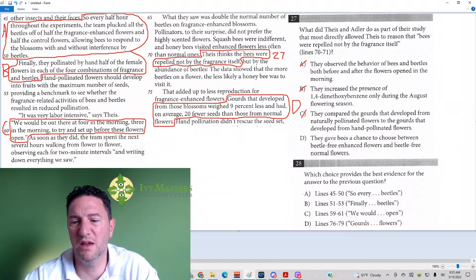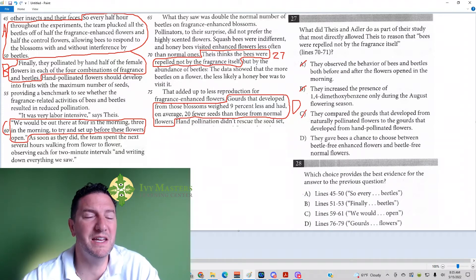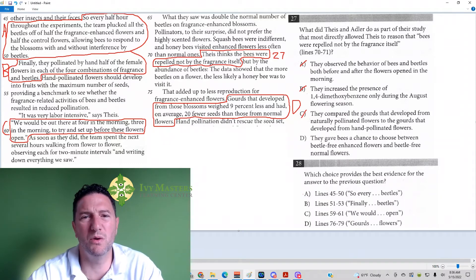Answer D: they gave the bees a chance to choose between beetle-free enhanced flowers and beetle-free normal flowers. Now, if beetles were what the bees may have been repelled by, then that could be the correct answer. So answer choice A is what the team did. Now, let's just see, we're going to read the other answer choices, because there might be one that says more directly the answer.